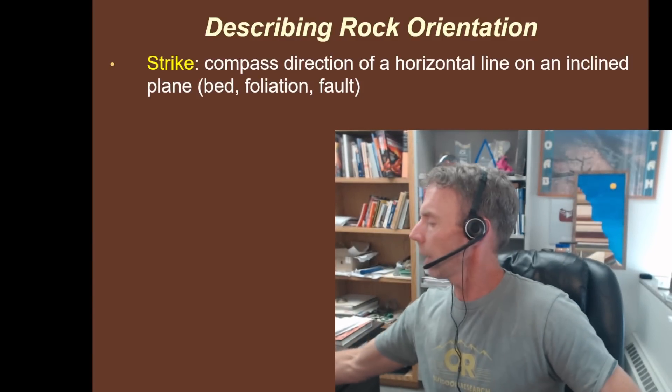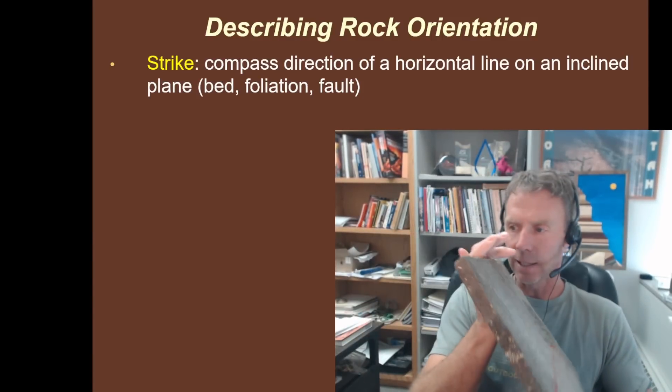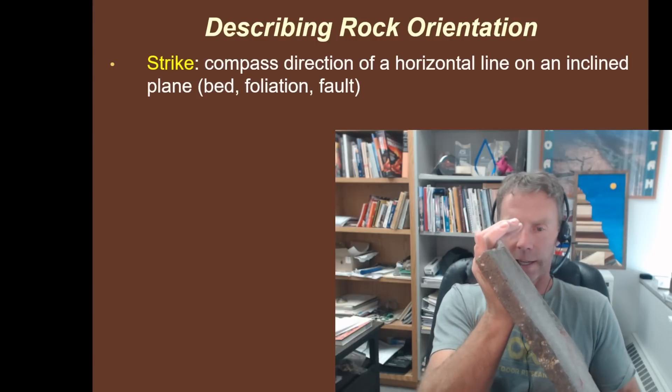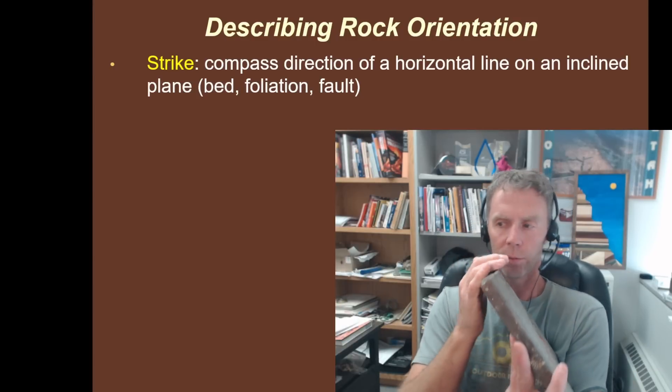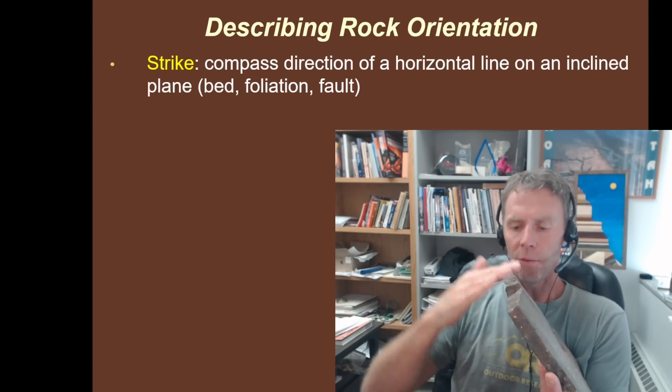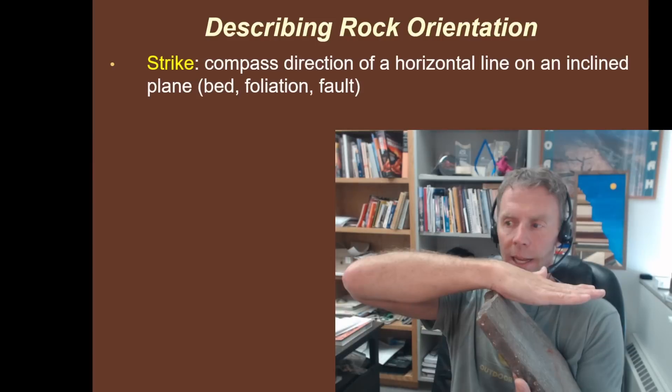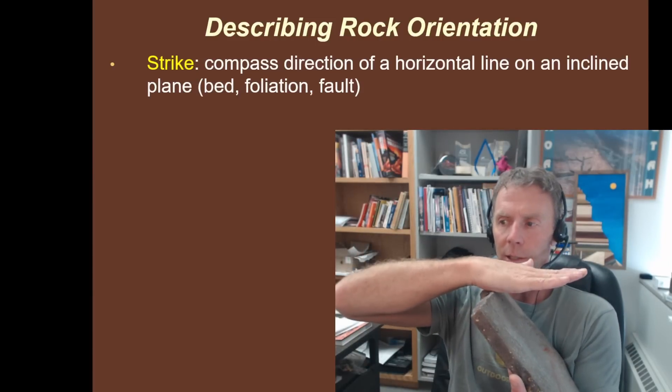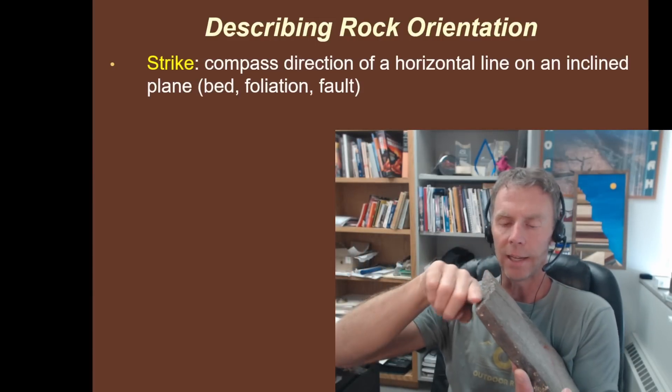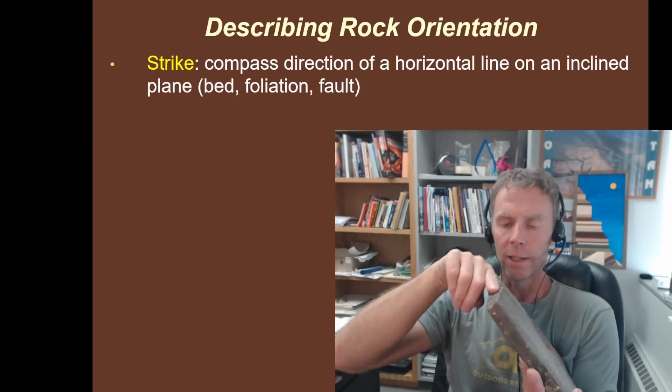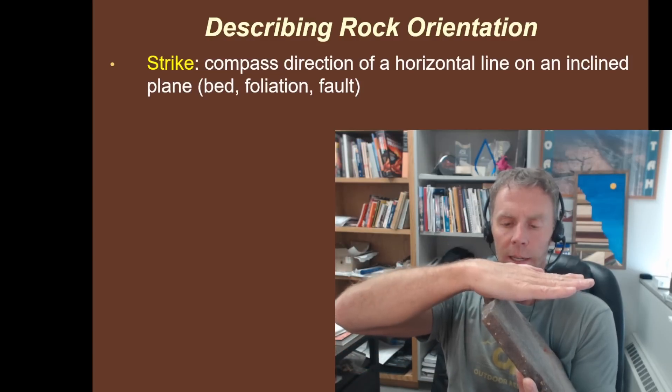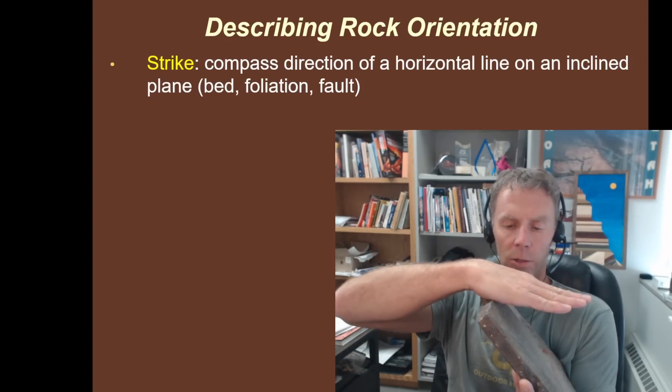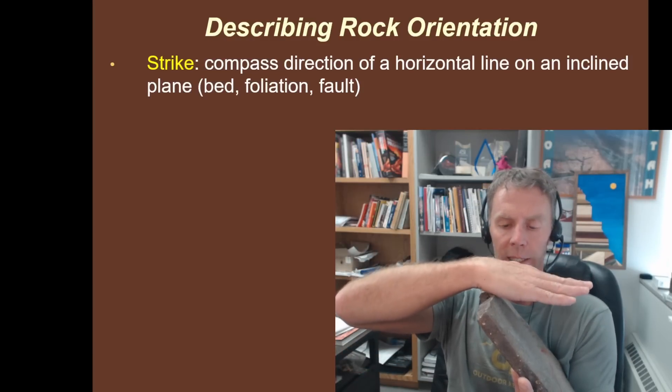Let me actually zoom myself back bigger again. So what we really mean when we say strike direction is if we have a tilted rock body like this, and if we envision a horizontal plane intersecting this tilted plane, that would make a line. So the line is the strike. It's where a horizontal plane intersects this tilted or inclined plane.